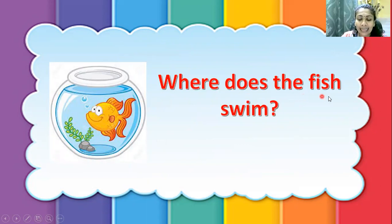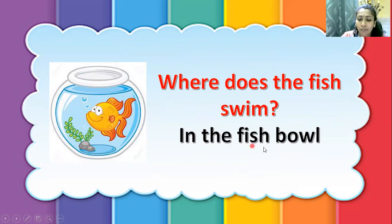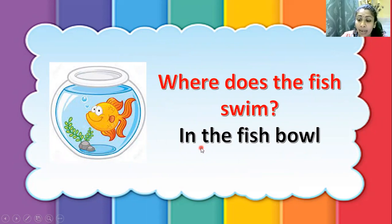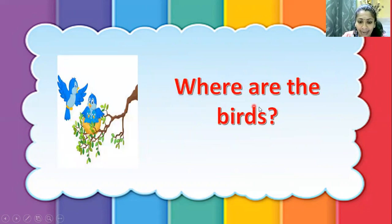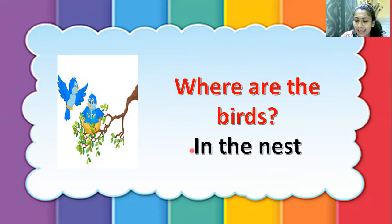Where does the fish swim? Look at the picture — the fish is in the bowl. So the answer is: In the fish bowl. 'In' is a preposition to show location. Next, where are the birds? Look at the birds — they are in the nest, or on the tree. You can say either answer: in the nest, or on the tree. So 'in' and 'on' are preposition words.